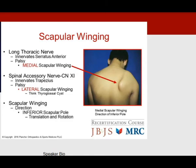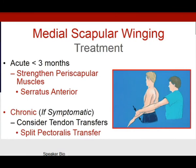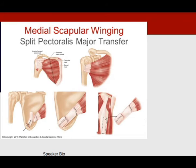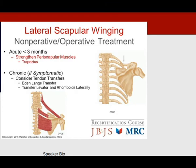Scapular winging is characterized by the direction of the inferior pole. Medial scapular winging involves serratus anterior palsy from the long thoracic nerve. Lateral scapular winging involves the trapezius innervated by the spinal accessory nerve — think of the neonate with a thyroglossal cyst. For acute medial winging (less than 3 months), strengthen periscapular muscles including serratus anterior. Chronically, perform a split pectoralis transfer with hamstrings. For lateral winging, acute treatment strengthens the trapezius; chronically, consider an Eden-Lange transfer of the levator and rhomboids.